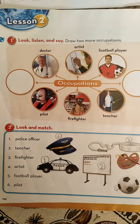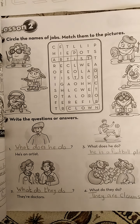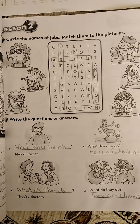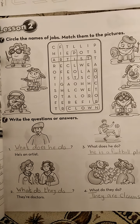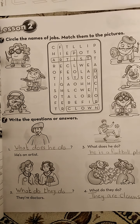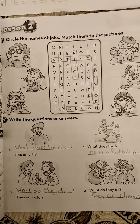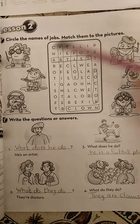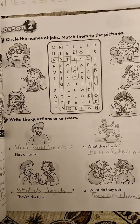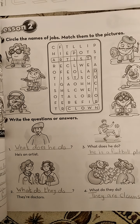Now let's move to the workbook. We have lesson two in our workbook, page 59. Let's read the first exercise: Circle the names of jobs, match them to the pictures. Here we have letters — we will circle the names of the job and match them to these pictures. Number one: We have firefighter. Where is the firefighter? He's here.